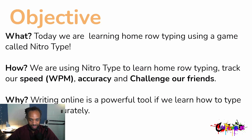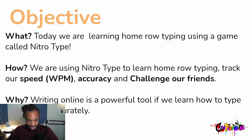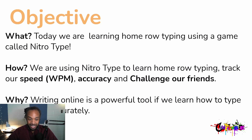Now my fingers work like a machine and it's really easy to get my ideas down and type them out. That's why we're practicing this. We are going to use Nitro Type to learn home row typing, track our speed and accuracy, and challenge our friends. Just like in typing.com, Nitro Type will tell you your speed and accuracy when you're done, and you can also challenge and compete against your friends.